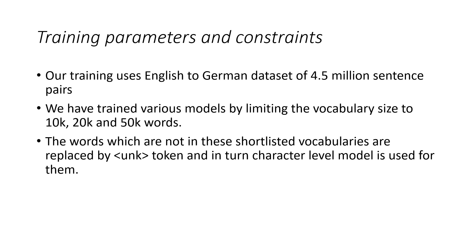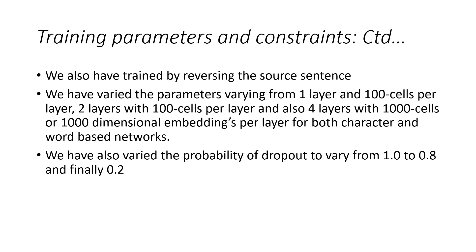Coming to the train parameters and constraints, our training uses English to German data set of 4 million sentences pairs. We have tested various models by limiting the vocabulary size to 10,000 words, 20,000 words and 50,000 words. The words which are not in these shortlisted vocabularies are replaced by UNK token and in turn character level model is used for them.